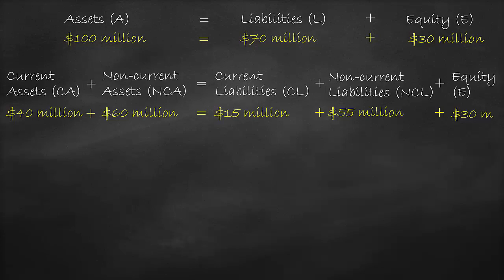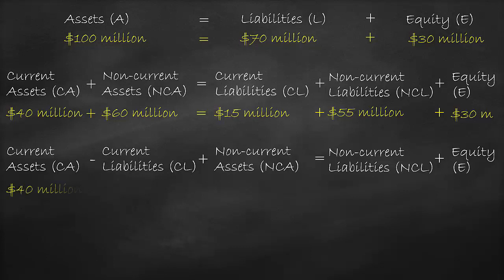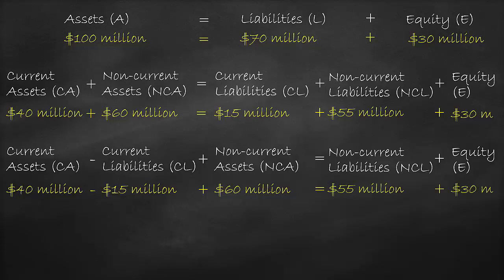We can rearrange this formula further by moving current liabilities to the other side, changing its sign, giving us a new formula: current assets minus current liabilities plus non-current assets equals non-current liabilities plus equity. Based on our previous example, we have $40 million of current assets minus $15 million of current liabilities plus $60 million of non-current assets, which equals $55 million of non-current liabilities plus $30 million of equity.